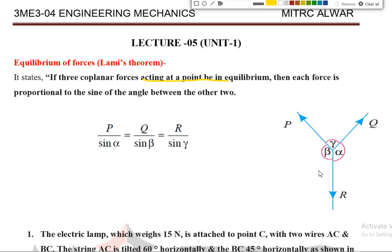From this figure, we can say that we have to find the fractions of P, Q, and R. What is the fraction of P? The opposite angle of P is alpha, so we write P divided by sine alpha. Similarly, for force Q, the opposite angle is beta, so Q divided by sine beta. And likewise, R divided by sine gamma.